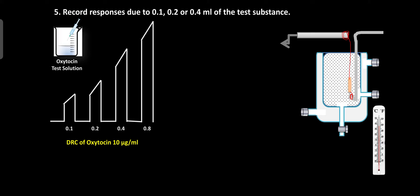After recording the DRC of standard oxytocin, record the responses due to 0.1, 0.2, and 0.4 ml of the test substance. After each response, stop the rotating drum, change the Ringer's solution at least two to three times during the washing period, then record the baseline again for 30 seconds.